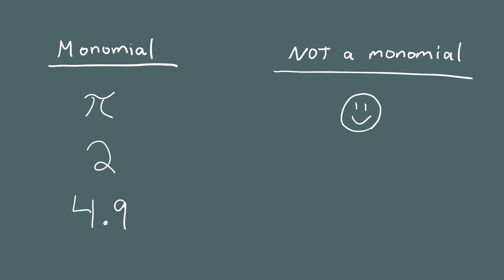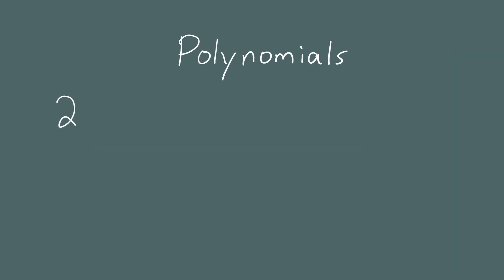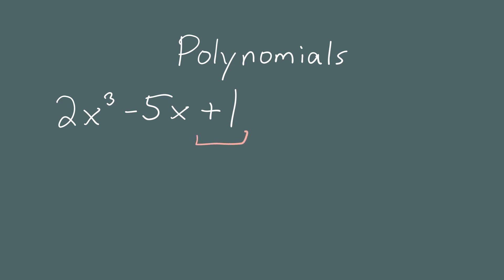Now that we know what a monomial is, let's look at some examples of polynomials. We'll start with 2x cubed minus 5x plus 1. This has three monomials combined together: 2x cubed, negative 5x, and plus 1. 2x cubed is a monomial — a number times a variable to a positive integer power. Negative 5x is also a monomial, and plus 1 is a monomial because it's a number.